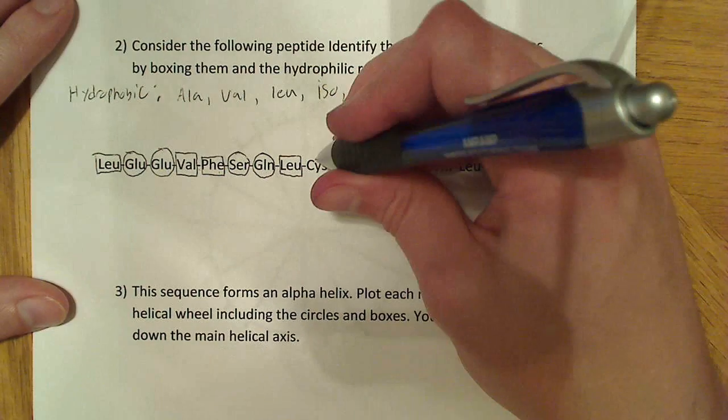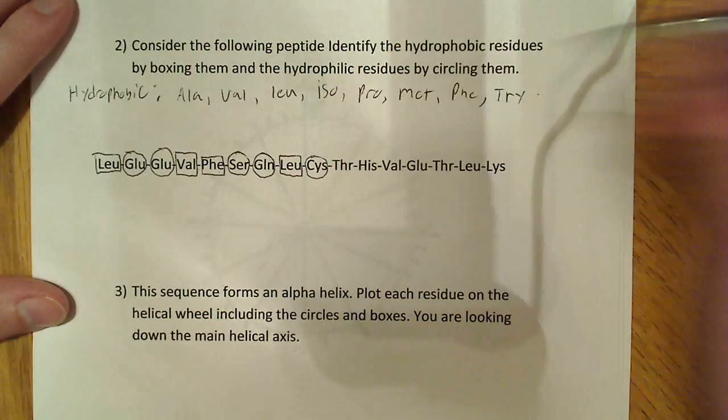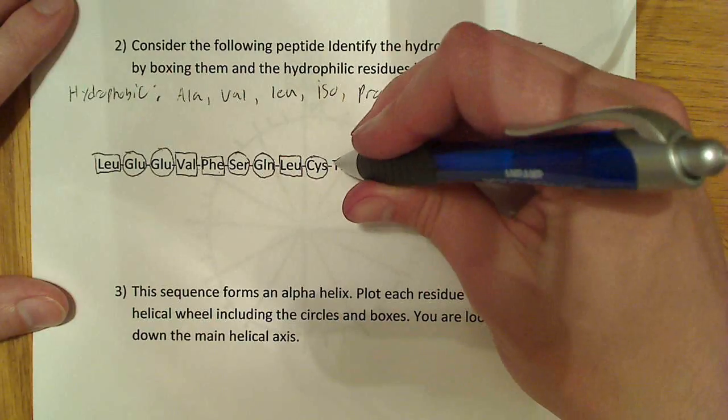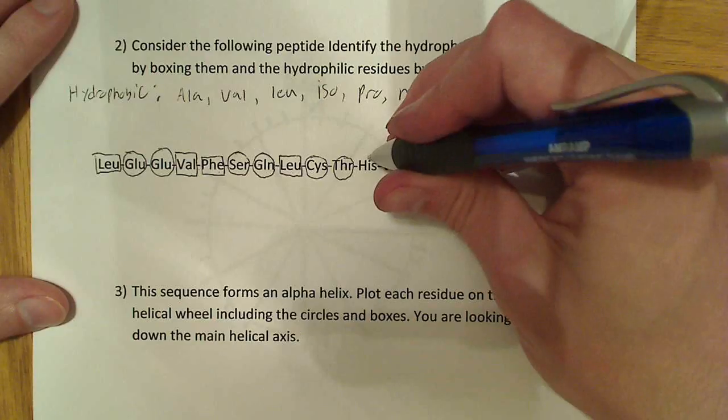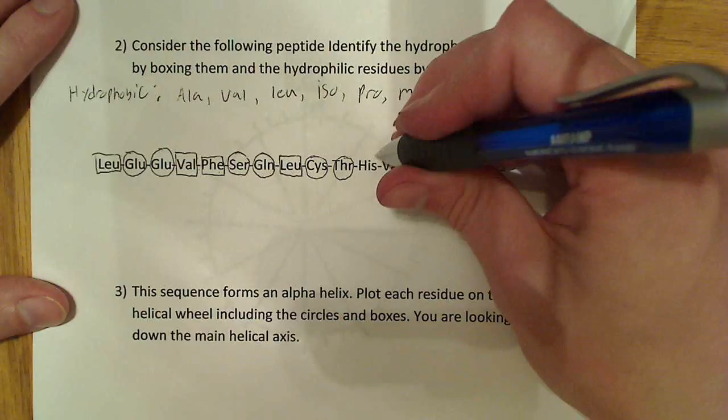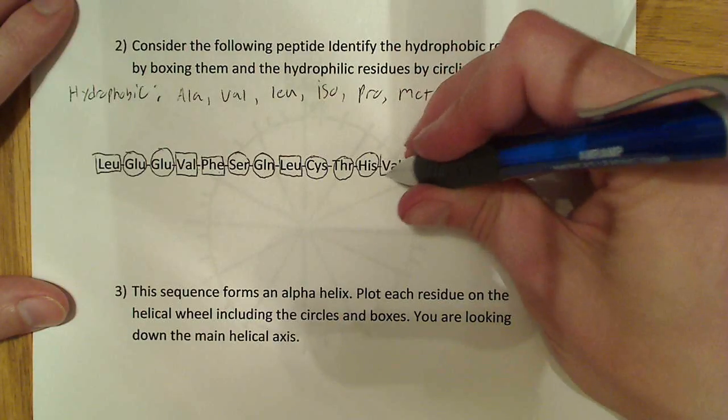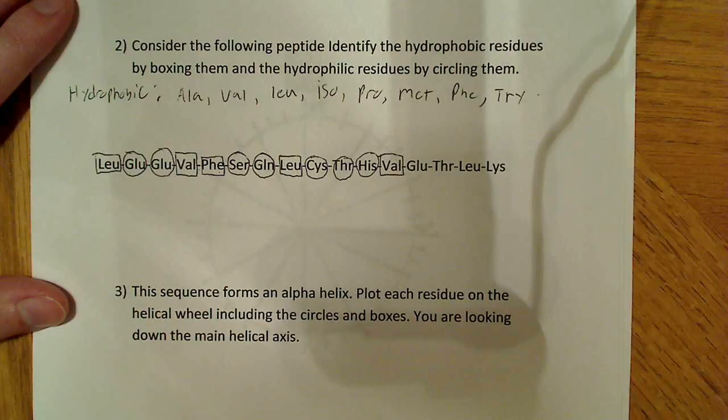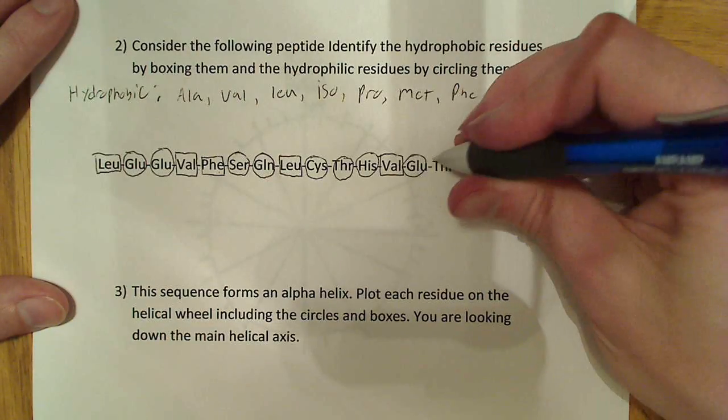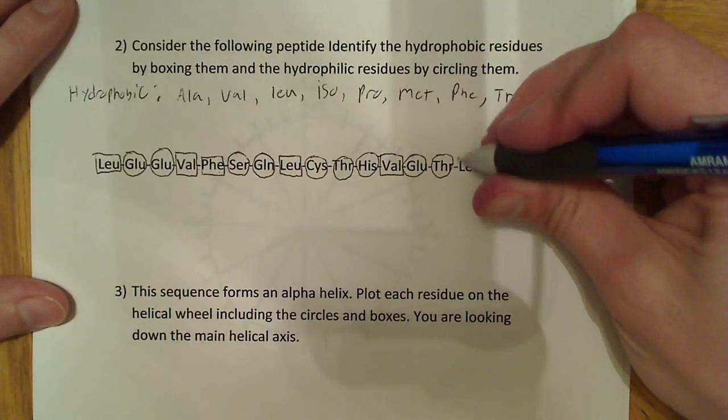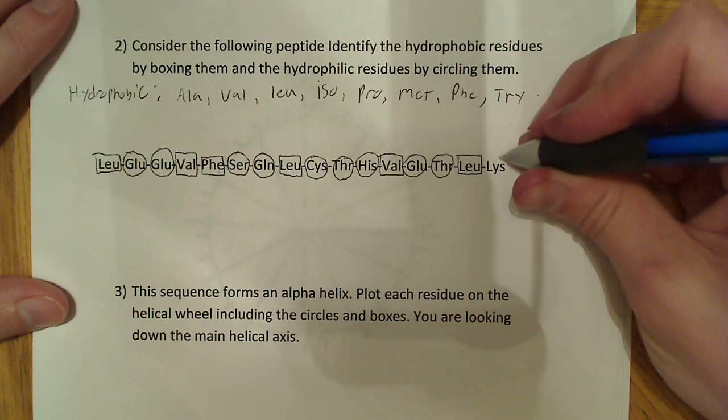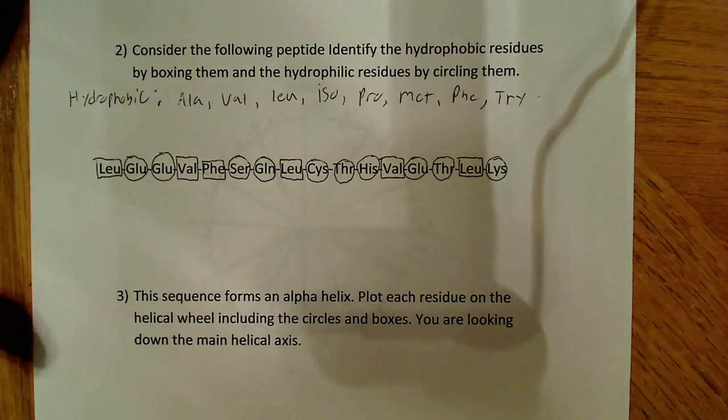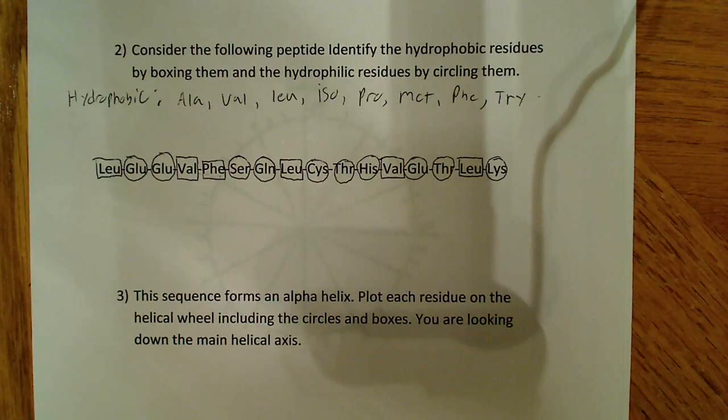Cysteine is not up here, as you can see, so it's hydrophilic. Threonine, hydrophilic. Histidine, again, hydrophilic. Valine, hydrophobic. Threonine. Leucine. And lysine. So, that's what they want you to do. They want you to put a box around the ones that are hydrophobic, and a circle around the ones that are hydrophilic. So, that's what we did.